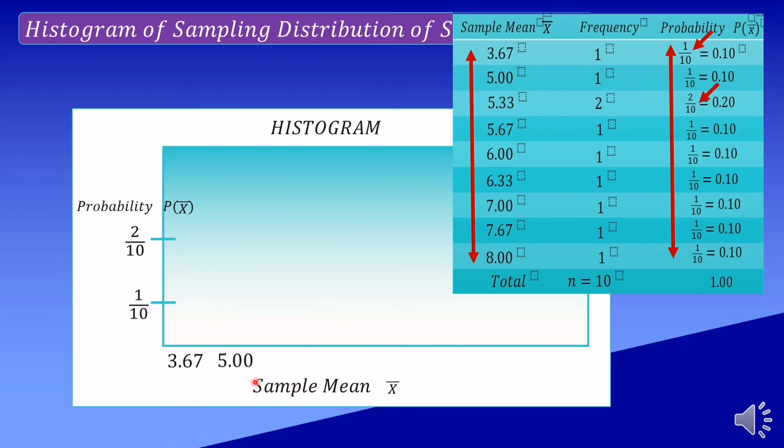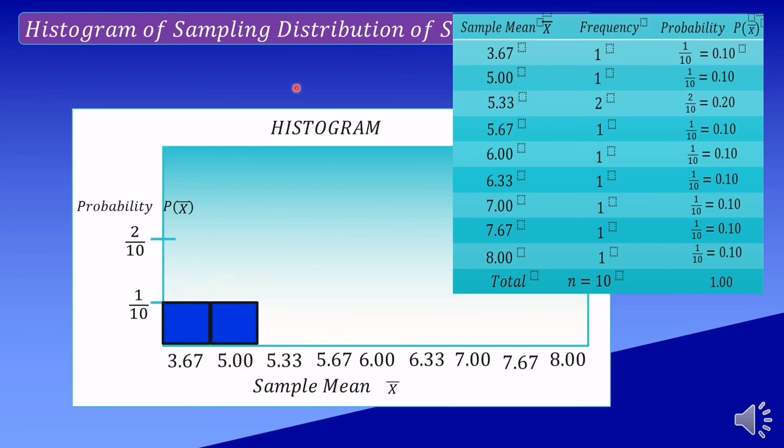We have to sketch the graph, the sample mean against the probability. The sample mean 3.67 against the 1 over 10, yan ang ating shaded region for our histogram. Then 5.0, same with the probability 1 over 10. Then 5.33, the probability is 2 over 10.